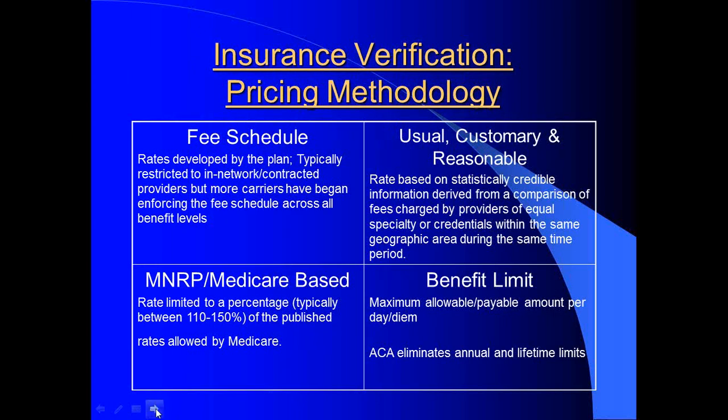The most difficult part of providing benefit quotes can be identifying how the allowable rate will be determined. Due to the ACA, patients will be asking what their balance is upfront — they want to shop around and compare benefit quotes. To get that information, you need to understand the different types of allowances and pricing methodologies. For in-network, it will be based on a fee schedule developed by the plan. Rates can change without notice, and you agreed to them when you signed your contract.